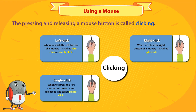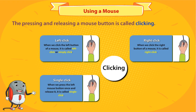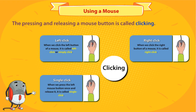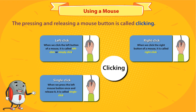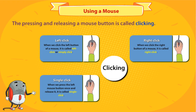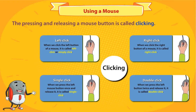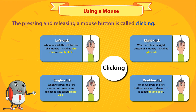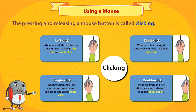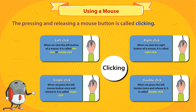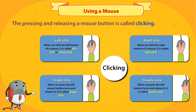Single click: when we press the left mouse button once and release it, it is called single click. Double click: when we press the left button twice and release it, it is called double click.